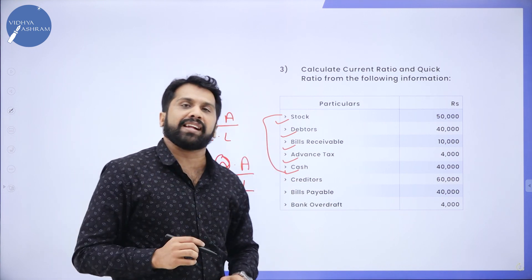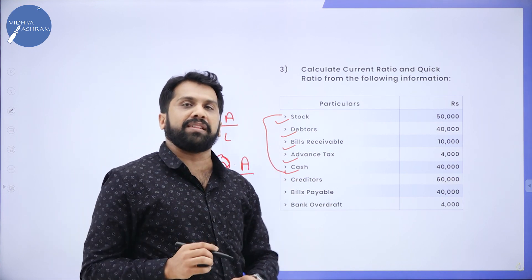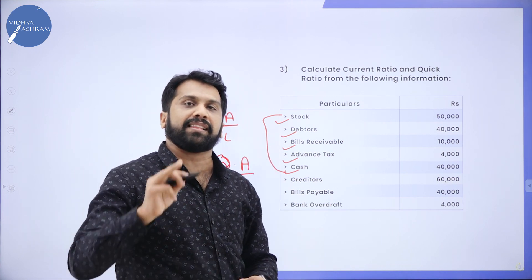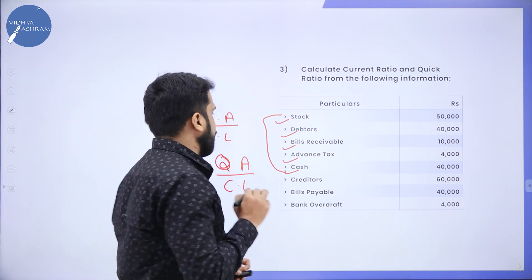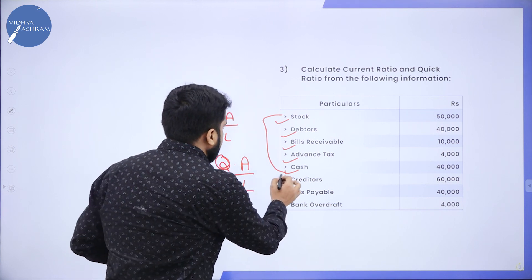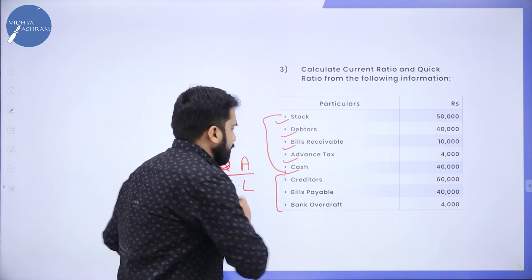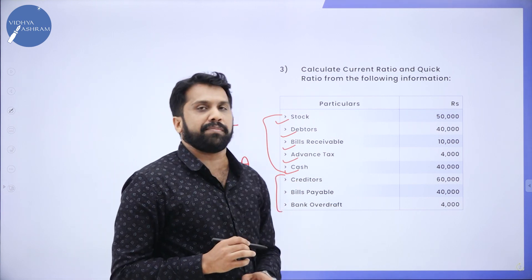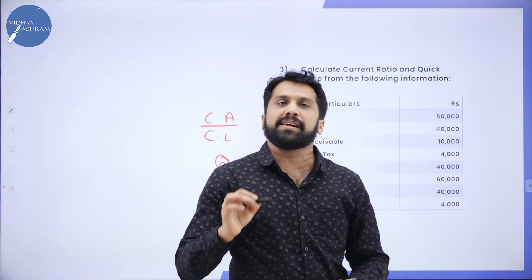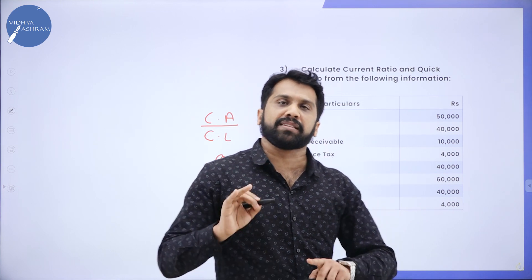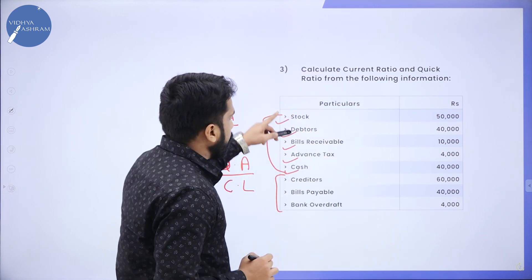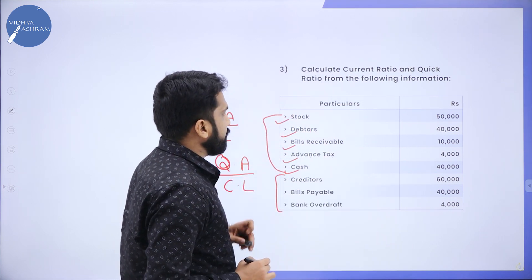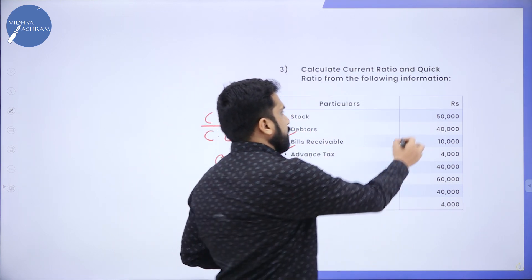Which are Current Liabilities? Current Liabilities are Credit Asset, Bills Payable, and Bank Overdraft.